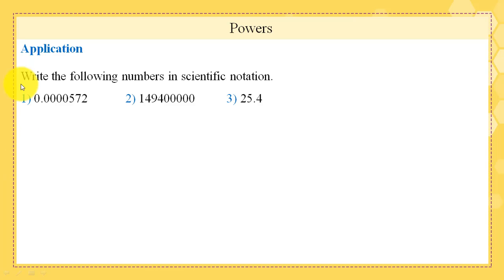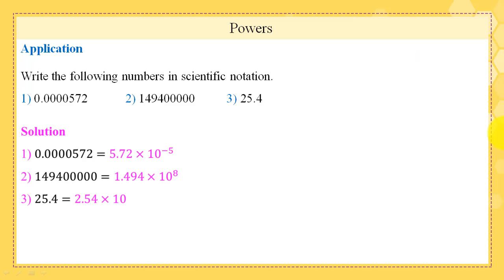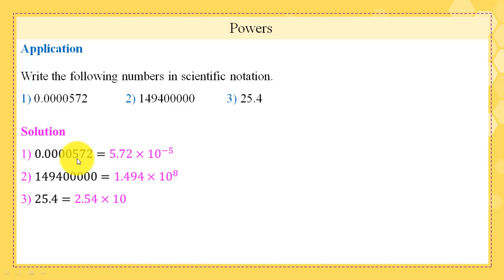Application: write the following numbers in scientific notation. Please pause the video and try to solve. Solution: recall that scientific notation writes decimal numbers in the form b times 10^p. For 0.0000572, move the decimal point to the right until reaching the first non-zero digit. We move 5 places to reach 5, putting the point between 5 and 7, giving 5.72 times 10^(minus 5). The power is negative since we moved the point to the right.